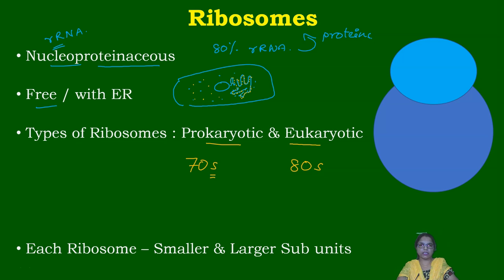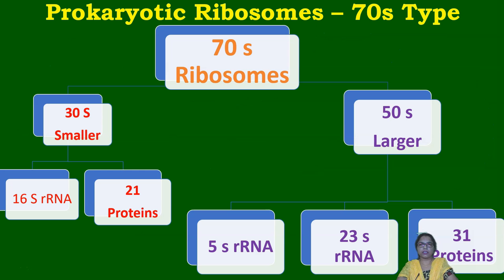Prokaryotic ribosomes are 70S and eukaryotic ribosomes are 80S. Each ribosome, whether prokaryotic or eukaryotic, contains two subunits — a smaller subunit and a larger subunit. In the 70S prokaryotic ribosome, the smaller subunit is 30S and the larger subunit is 50S.